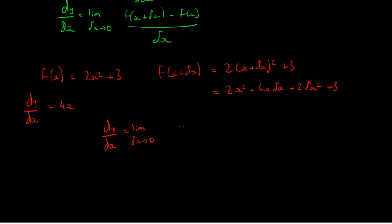f of x plus delta x is 2x squared plus 4x delta x, plus 2 delta x squared plus 3. Now, subtract f of x, and f of x is 2x squared plus 3. I put this in brackets just to remind me that I'm subtracting the whole amount of f of x, not just the first term.